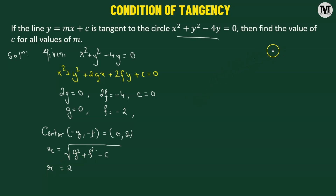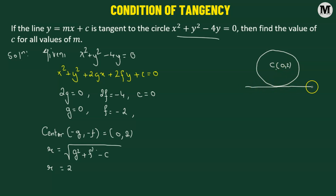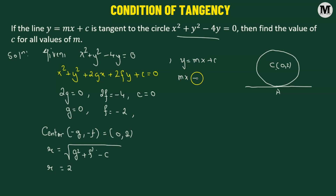The circle is centered at point C with coordinates (0, 2). We have a line tangent to the circle at point A. The equation of the line is y equals mx plus c, which is the slope-intercept form. We rewrite it as mx minus y plus c equals 0 to put it in the standard form ax plus by plus c equals 0. We need to find the value of the constant c.